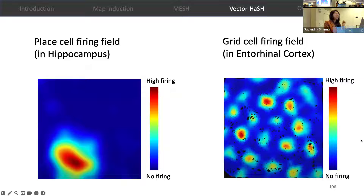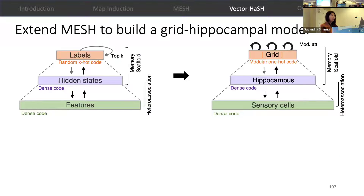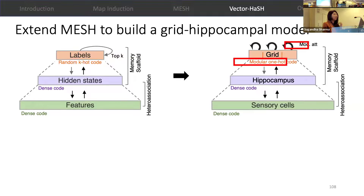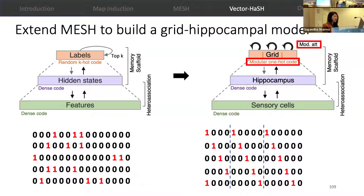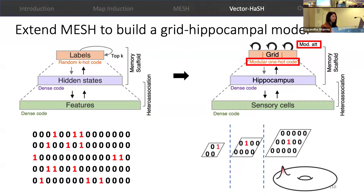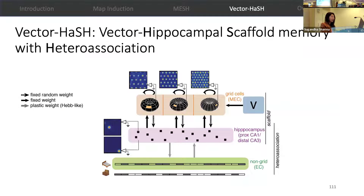In order to model the interactions between the hippocampus and the entorhinal cortex, we extend MESH to build a grid hippocampal model. We take the random k-hot code and the top-k winner-take-all dynamics on the label layer and replace it with the modular one-hot grid code and modular attractor dynamics of grid modules. We replace this k-hot code with a one-hot code that is modular and periodic and represents a state on a ring, and we further generalize this to a 2D code, which represents a state on a torus.